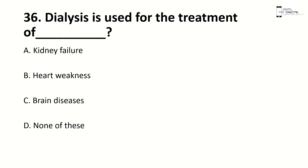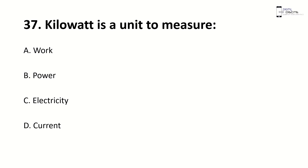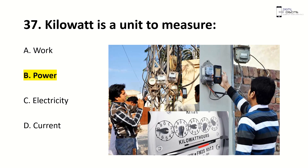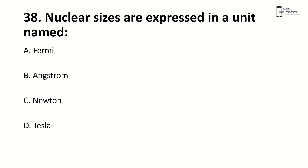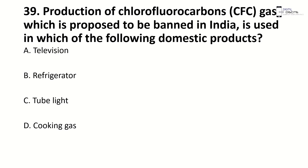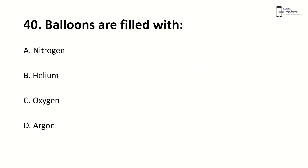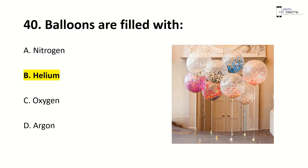Dialysis is used for the treatment of — right answer is A, kidney failure. Kilowatt is a unit to measure — right answer is B, power. Nuclear sizes are expressed in the unit — right answer is A, Fermi; 1 Fermi equals 10⁻¹⁵ meters. Production of chlorofluorocarbons or CFCs, which are proposed to be banned, are used in — right answer is B, refrigerators. Balloons are filled with — right answer is B, helium.